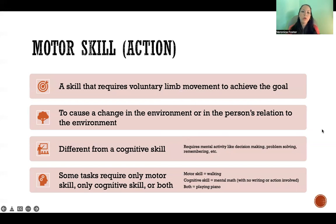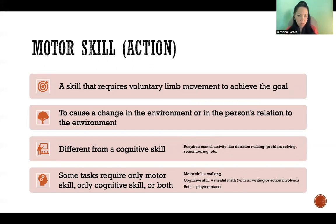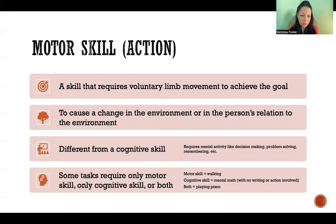A motor skill — also referred to as an action — is a skill that requires voluntary limb movement to achieve the goal. Up till now we've been talking about skill in general, which can include cognitive skills and other types, but a motor skill specifically requires voluntary limb movement to achieve the goal.